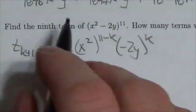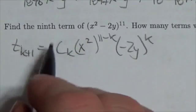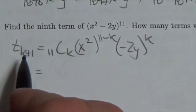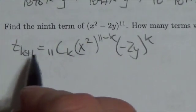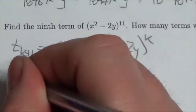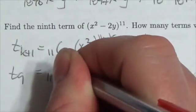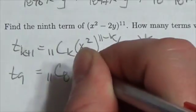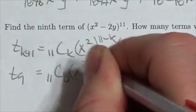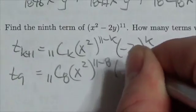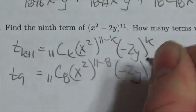And so now, if I want the ninth term, then I know specifically that k must be 8, so that that subscript is equal to 9. So the ninth term is going to be 11 choose 8, x squared to the 11 minus 8, negative 2y to the 8.